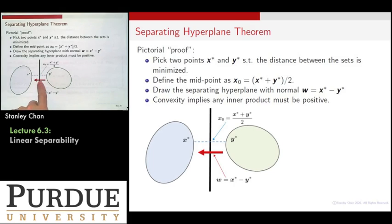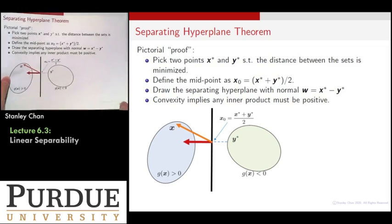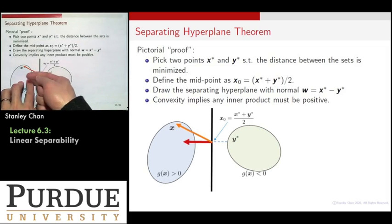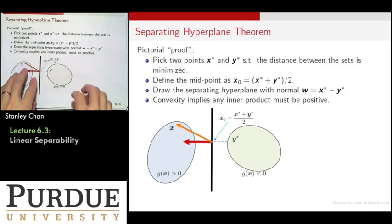That perpendicular line will become your separating hyperplane. Draw that line, and then you can also define that normal direction of that plane, which is essentially just x star minus y star. Then how can you use this convexity? You pick a point in the set and measure the angle with respect to your normal direction. Because it is convex, that angle has to be less than 90 degrees.